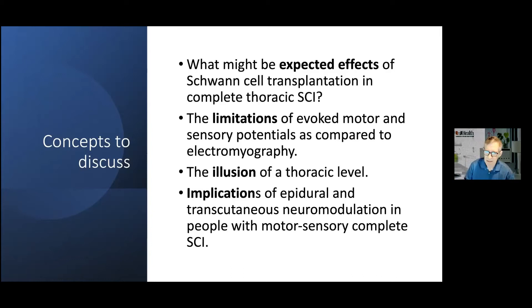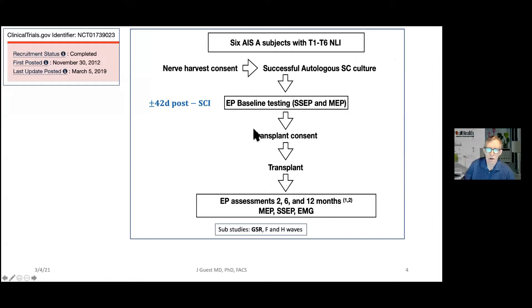This morning, we're focusing on people who have a complete thoracic injury. And so briefly, this is what our trial looked like. We enrolled six subjects. They underwent a nerve harvest, and their own cells were grown in culture. And then at an average of 42 days post SCI, all the baseline studies that included neurophysiology were done. And they went forward into the transplant if they were still neurologically complete, which meant that at baseline they didn't have any evoked potentials. And then we brought them back and did assessments at two, six, and twelve months.